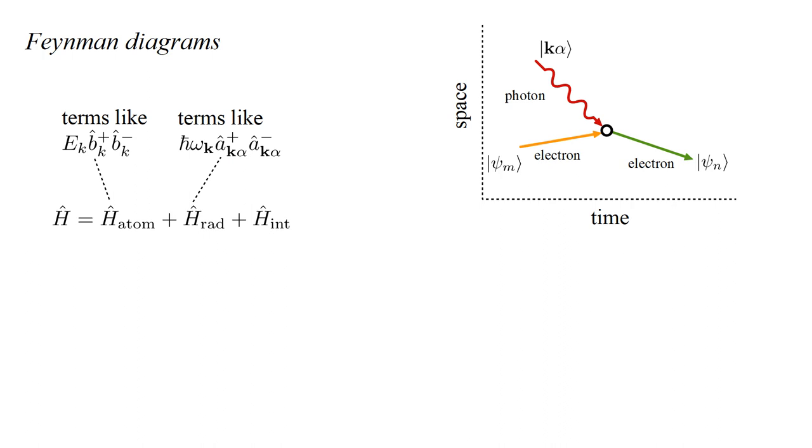Our Feynman diagram shows the original electron and photon converging on the vertex where they are destroyed, and the created electron emerging from the vertex.